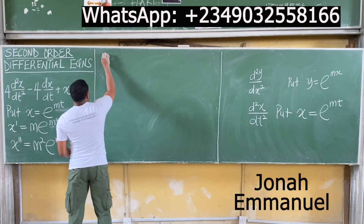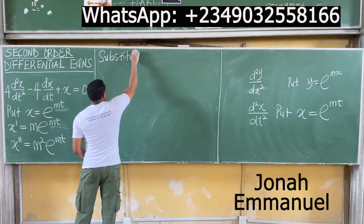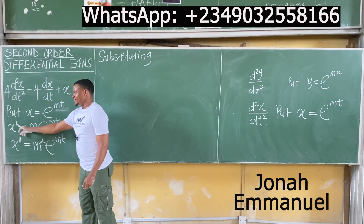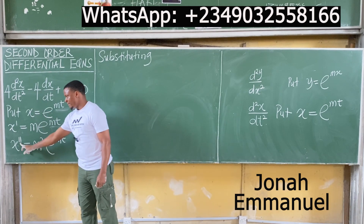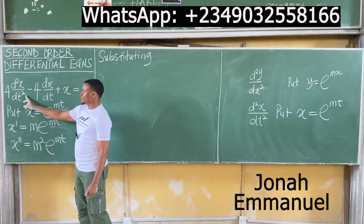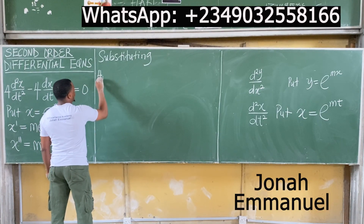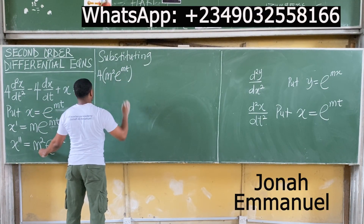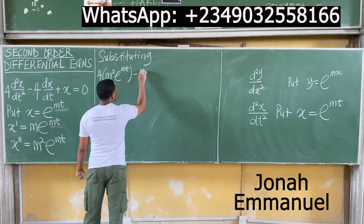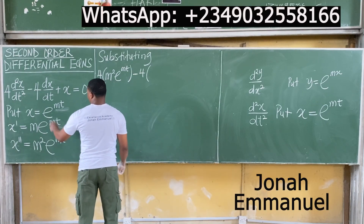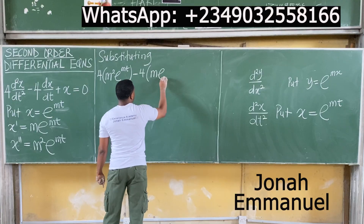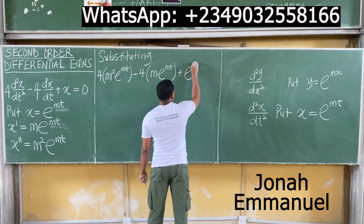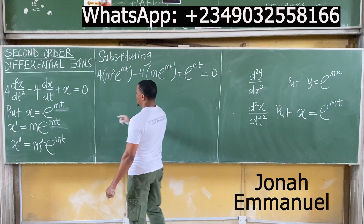Our next task is to substitute. Substitute the value of x, x prime which is dx/dt, and x double prime which is d²x/dt² into the equation. So: 4 into m squared exponential mt, minus 4 into m exponential mt, plus exponential mt, equals 0.